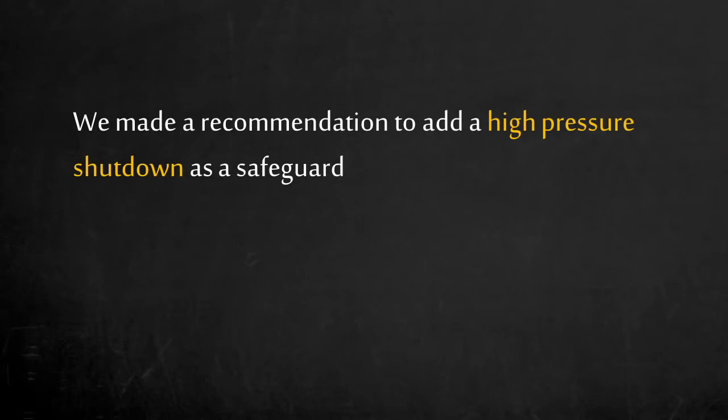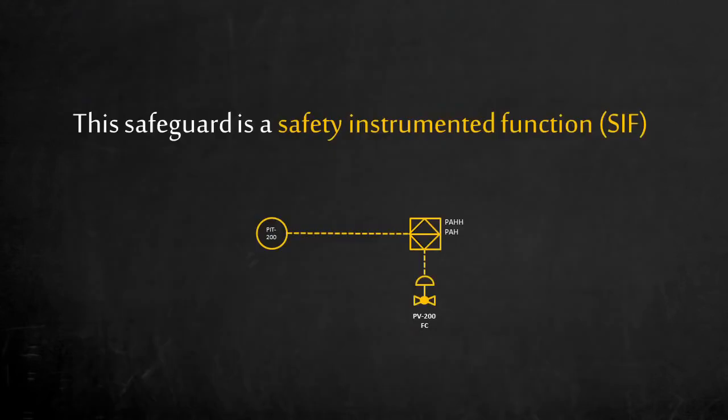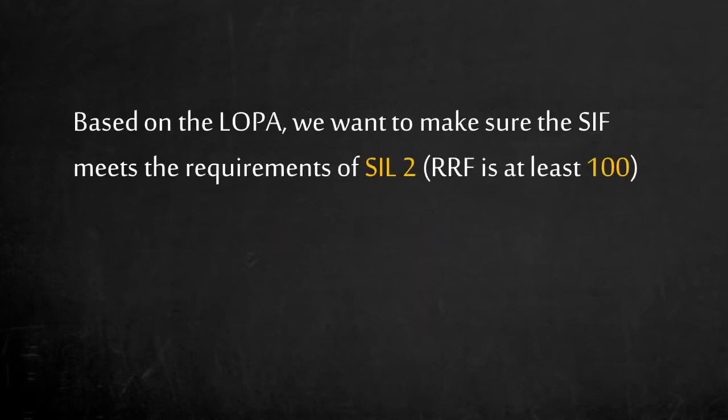To further reduce the likelihood of the vessel overpressuring, we made a recommendation to add a high pressure shutdown as a safeguard. The high pressure shutdown is a safety instrumented function, which consists of a sensor, a logic controller, and the final element. Based on the LOPA, we want to make sure the safety instrumented function meets the requirements of SIL2, which reduces the risk by 100 times.